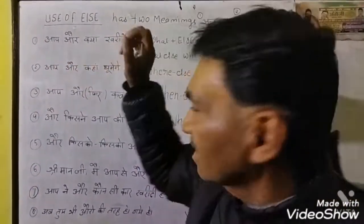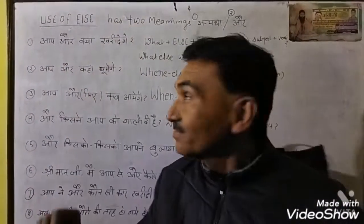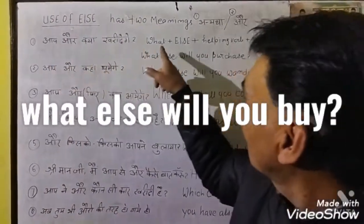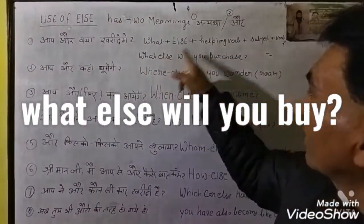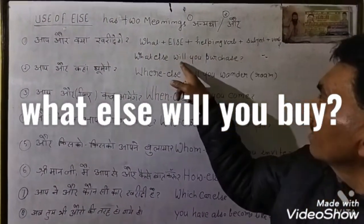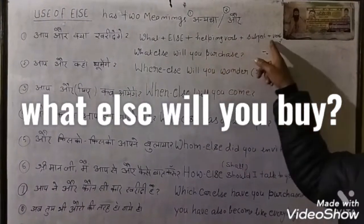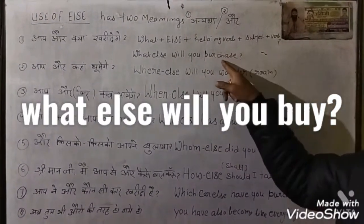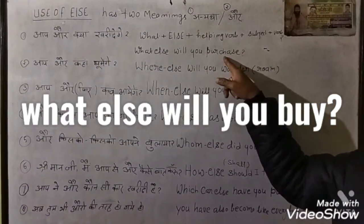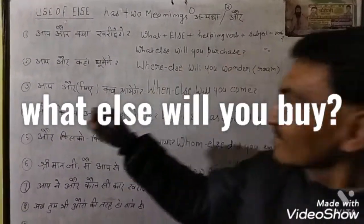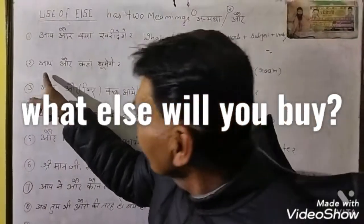Look here. तो पहले 'और क्या' — 'what else', फिर helping verb 'will', फिर subject 'you', फिर verb 'purchase'. So: 'What else will you purchase?' I hope it is clear.